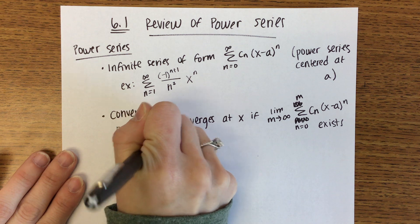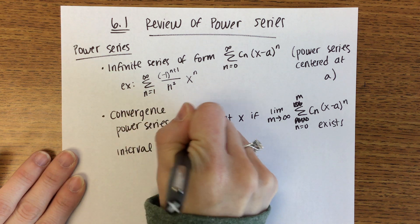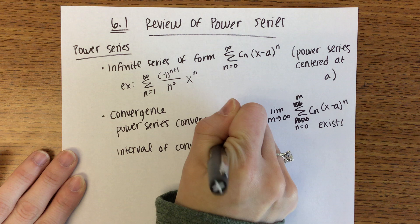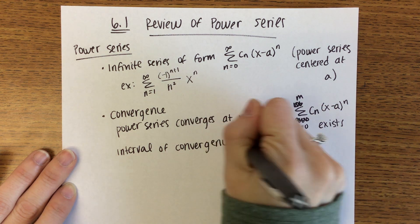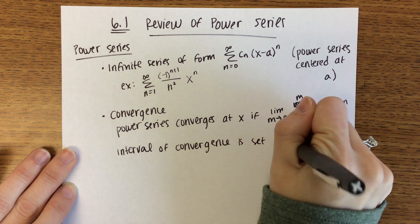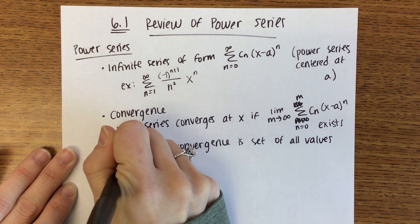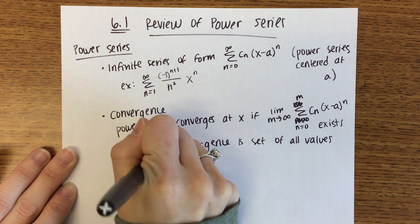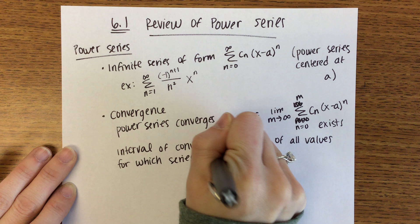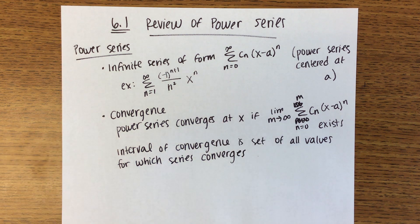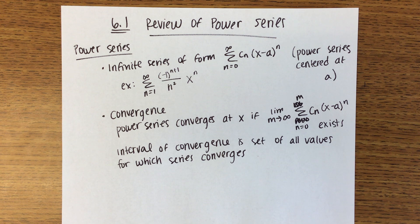Oftentimes we are interested in the interval of convergence. The interval of convergence is the set of all values of x for which the series converges. We're going to review later in today's notes how to find the interval of convergence, which is related to the radius of convergence.